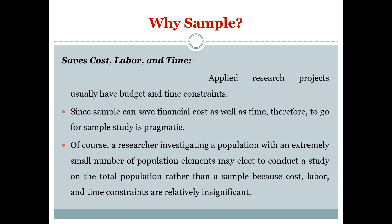Why sample? Because it saves cost, labour, and time. Applied research projects usually have budget and time constraints. When we plan the research and objectives, it has to be SMART — Specific, Measurable, Achievable, Realistic, and Time-bound. Time and budget are the biggest constraints, and since sampling can help save financial cost as well as time, going for a sample study is pragmatic and important.